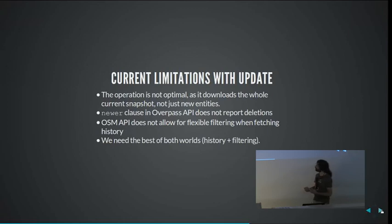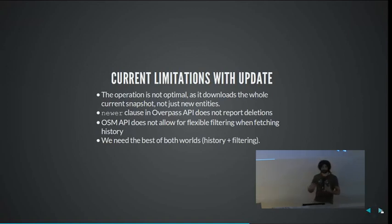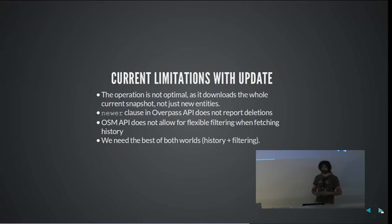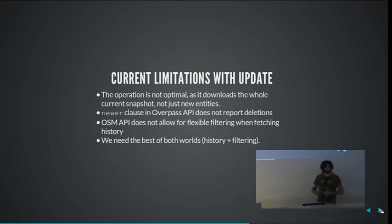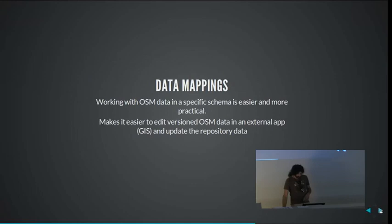That was causing a problem for us because we need to know what has been deleted. So what we are doing now is not very smart — we just download everything and then let GeoGit see what has changed. That's the limitation that, from our point of view, the Overpass API has. Someone mentioned to me that that has changed and now the Overpass API gives deleted features too, but we haven't implemented that yet. We need to improve that.